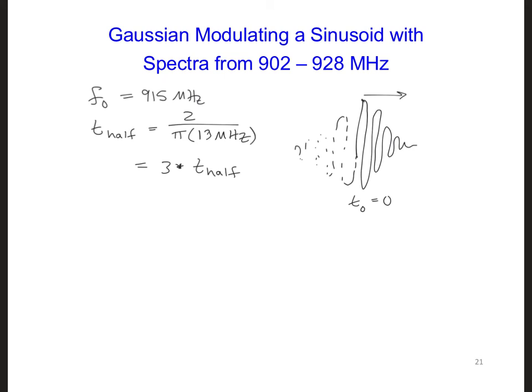Go ahead and program this new source into your DFT code. Plot both the time waveform and then also the spectrum as before, but you can plot it just from 820 MHz to 980 MHz. Make sure both the time waveform and the spectra look like what you're expecting based on the sketches that we created on the previous slide.